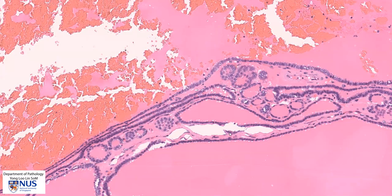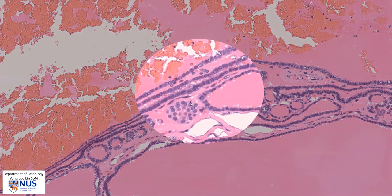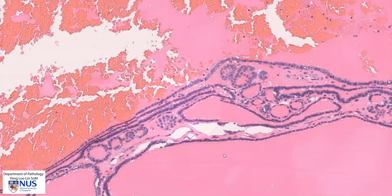Now we are going to take a close look at the nuclei. We can see that the nuclei of these follicular cells are very round and very uniform, and they don't show any suspicious features at all. In most instances, multinodular goiters have these nuclear features.